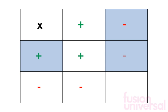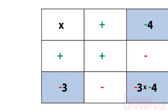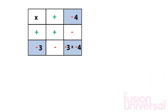Finally, let's finish off our pattern by looking at a negative multiplied by a negative. Negative 3 multiplied by negative 4. Let's see what this could be.